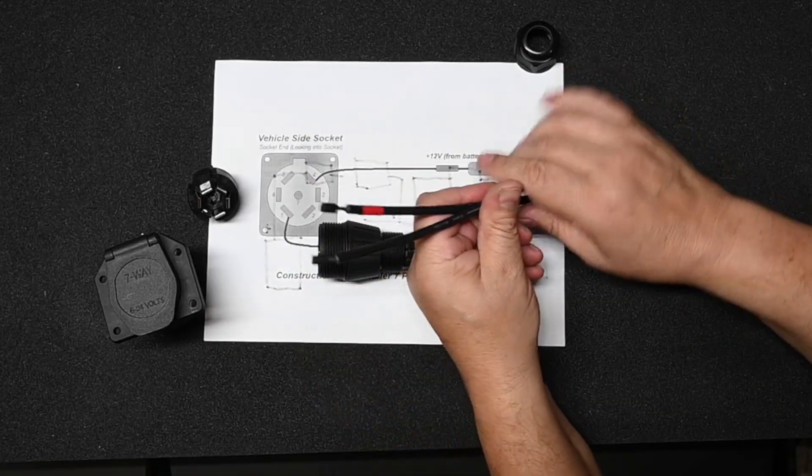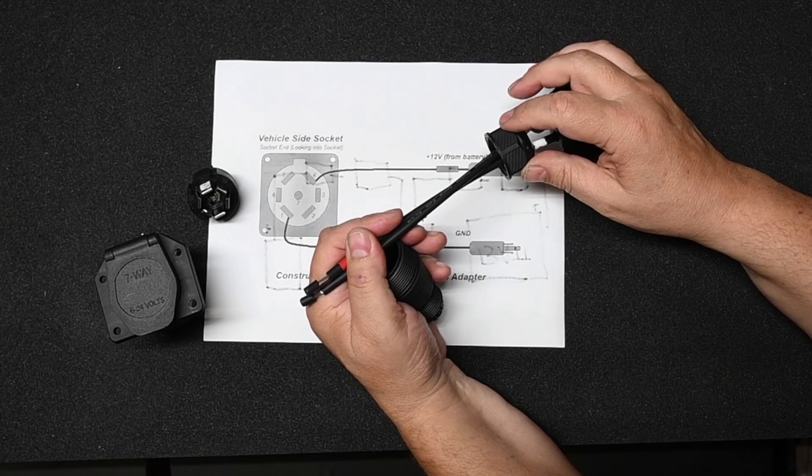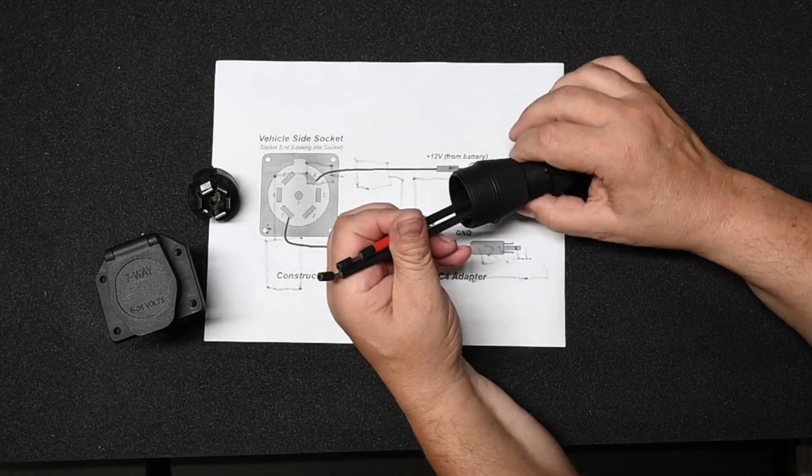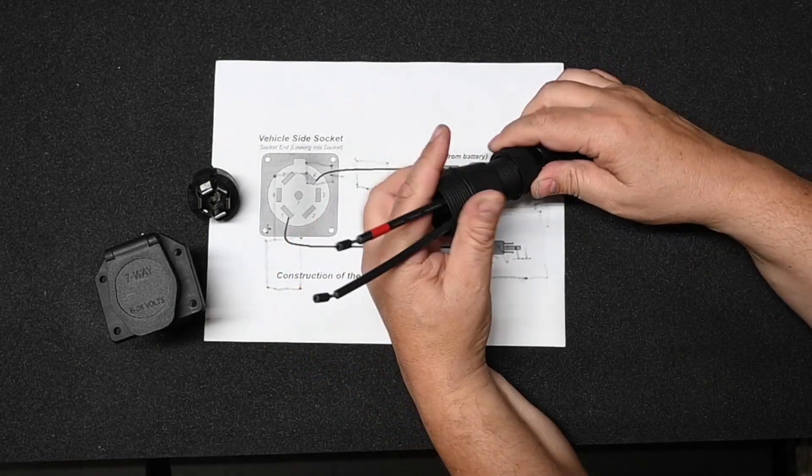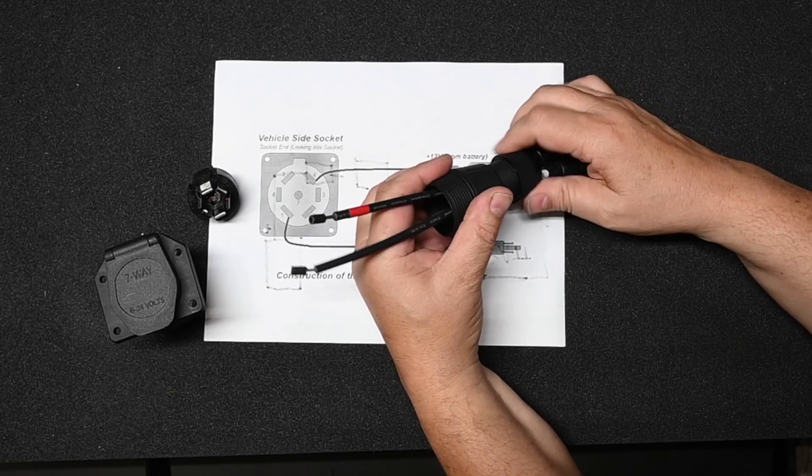Take your two pigtails, feed them through the gland cap, and then into the gland itself. And you can loosely put it back on.